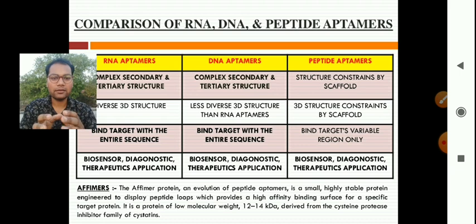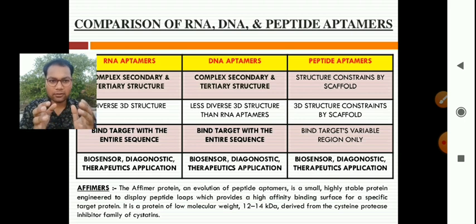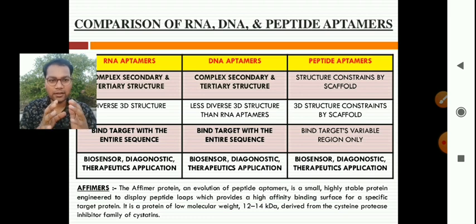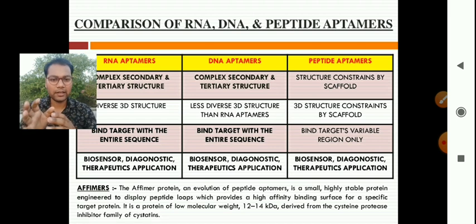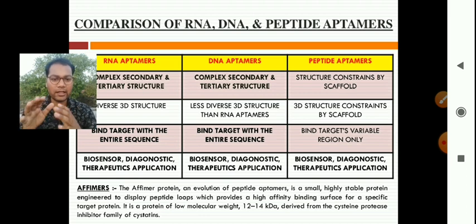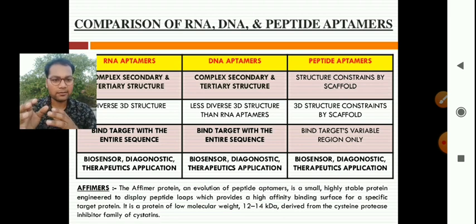RNA aptamers, DNA aptamers, and peptide aptamers are all used as biosensors, in diagnostics, and in therapeutic applications. Ephemers are small, highly stable proteins engineered to display peptide loops, which provide a high-affinity binding surface for a specific target protein. They are proteins of low molecular weight, approximately 12 to 14 kiloDalton, derived from the cysteine protease inhibitor family of cystatins.